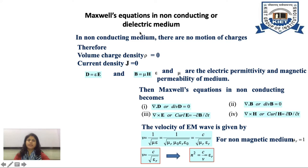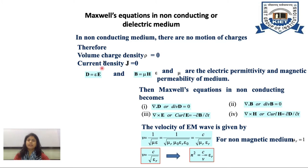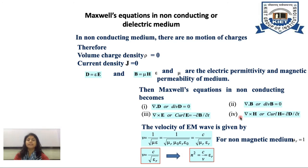Maxwell equations in non-conducting medium or dielectric medium. In a non-conducting medium there is no motion of charges, therefore volume charge density rho equals 0 and current density J equals 0. Here D equals epsilon E and B equals mu H, where epsilon is the electric permittivity and mu is the magnetic permeability of the medium. The Maxwell equations become: divergence D equals 0, divergence B equals 0, curl E equals minus del B over del t, and curl H equals del D over del t (since J equals 0).